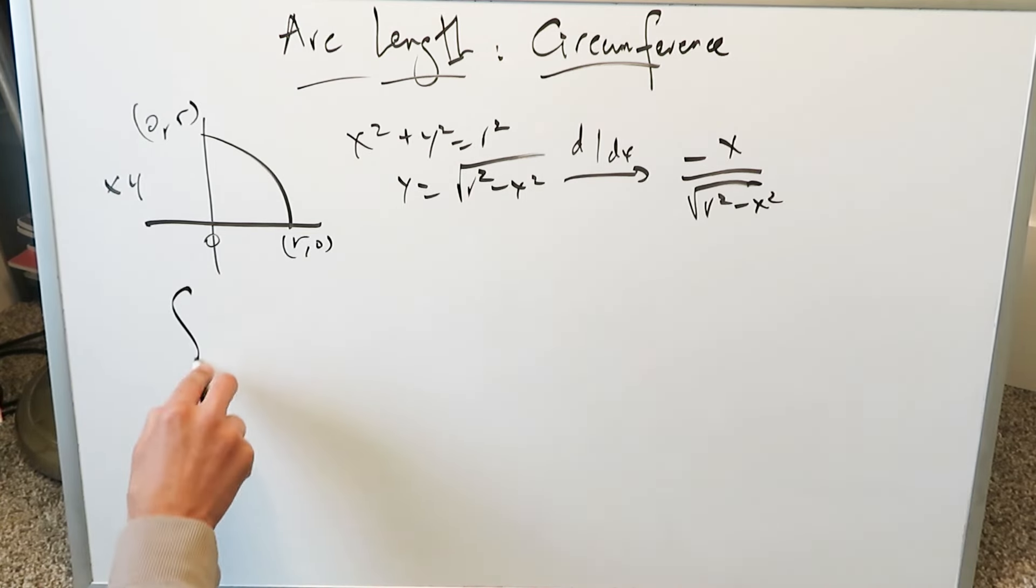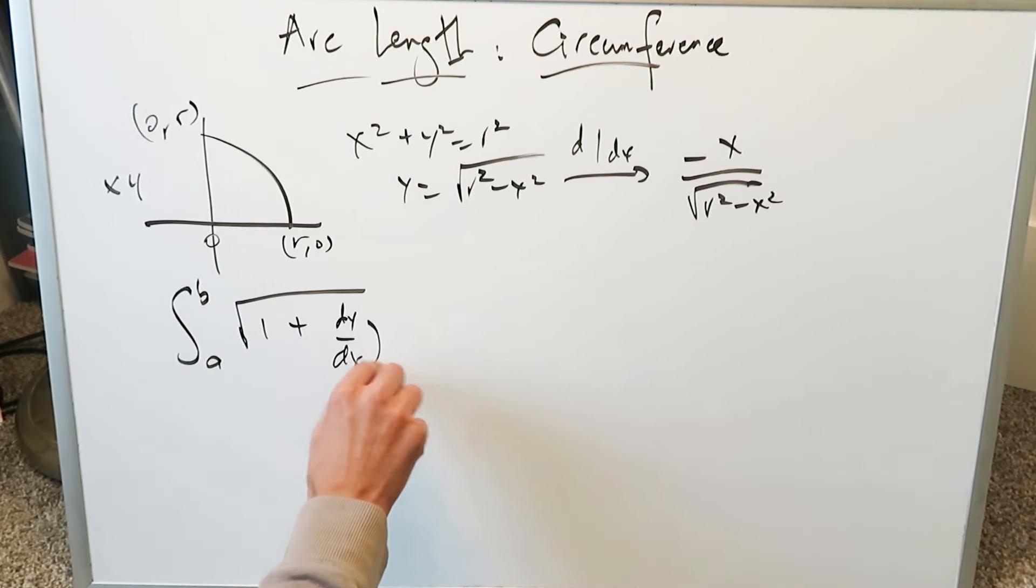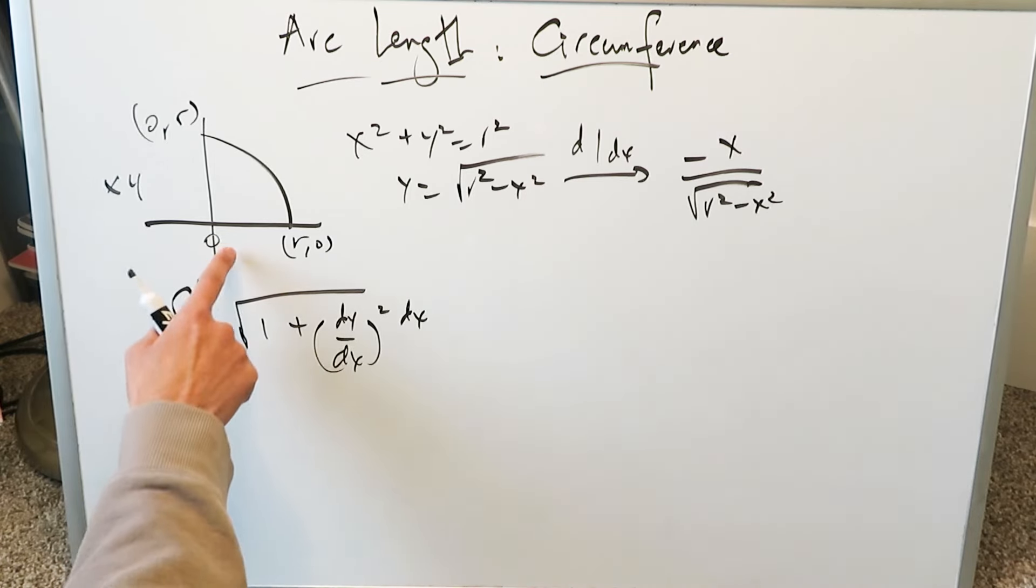The arc length formula: integral from a to b of √(1 + (dy/dx)²) dx. What's my a over here? It's 0. What's b? It's r.